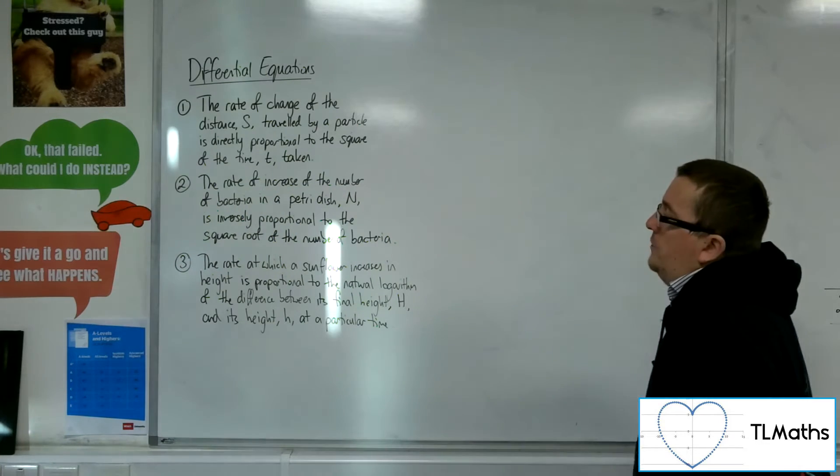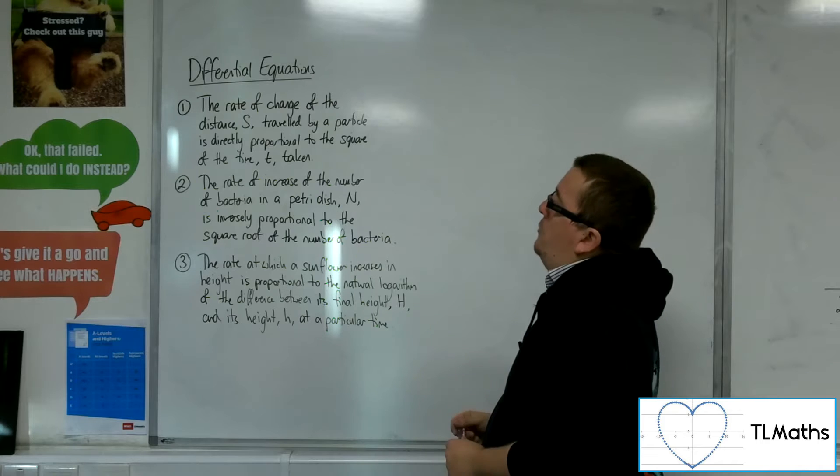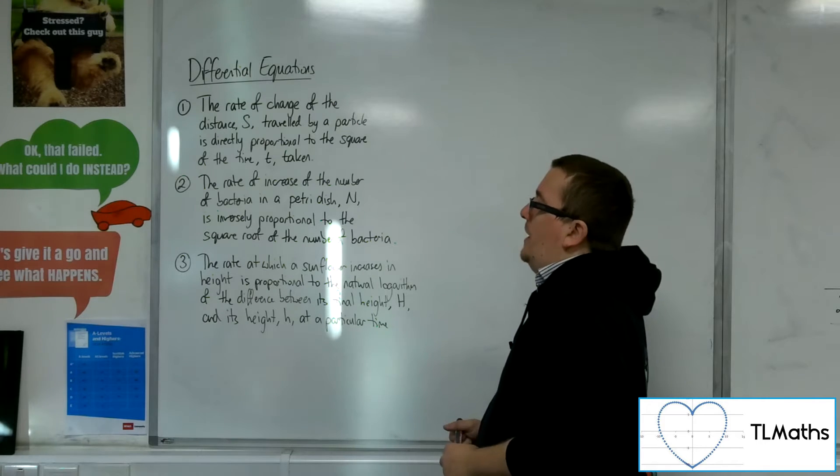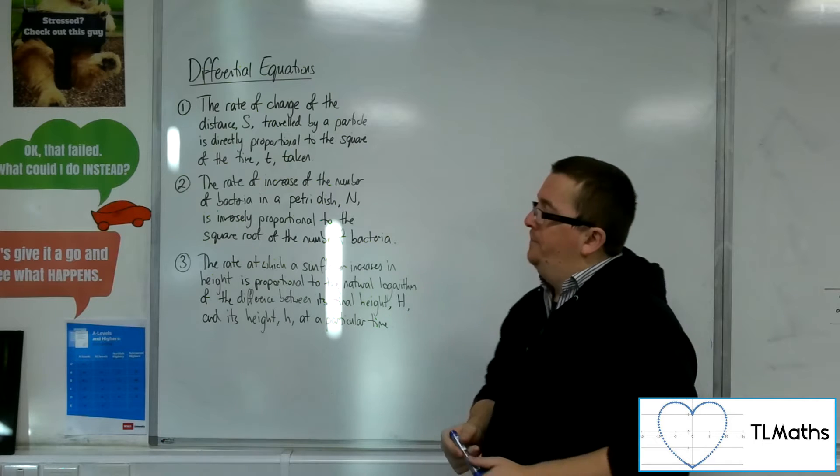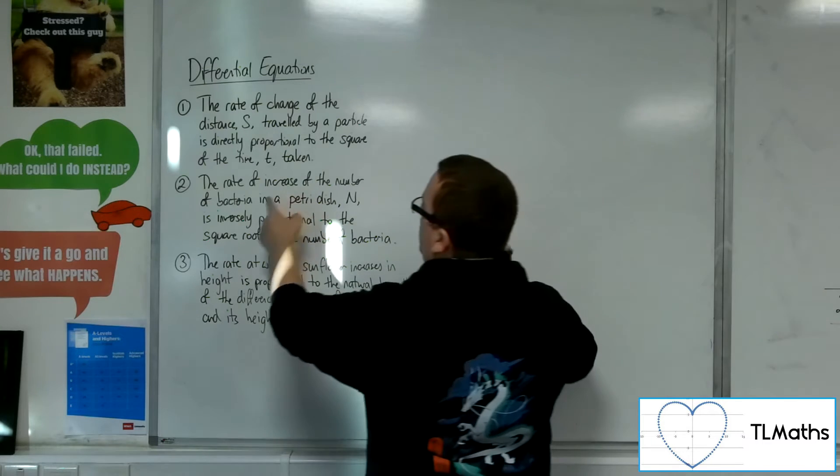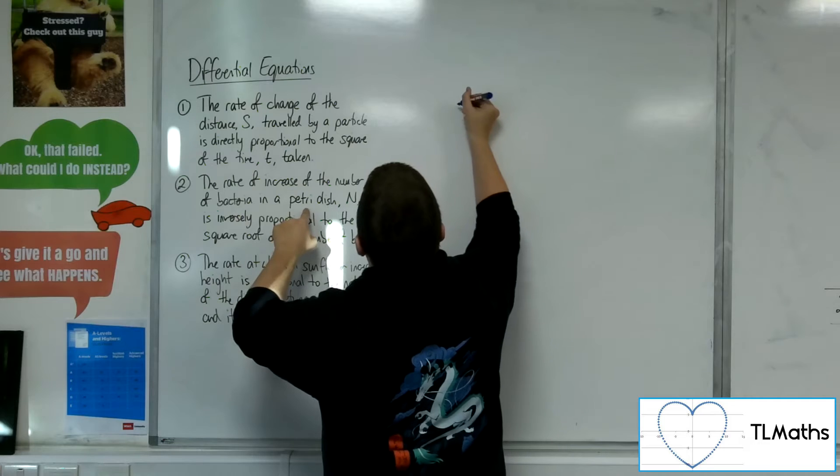Number two, the rate of increase of the number of bacteria in a petri dish, n, is inversely proportional to the square root of the number of bacteria. So the rate of increase of the number of bacteria in a petri dish, n,